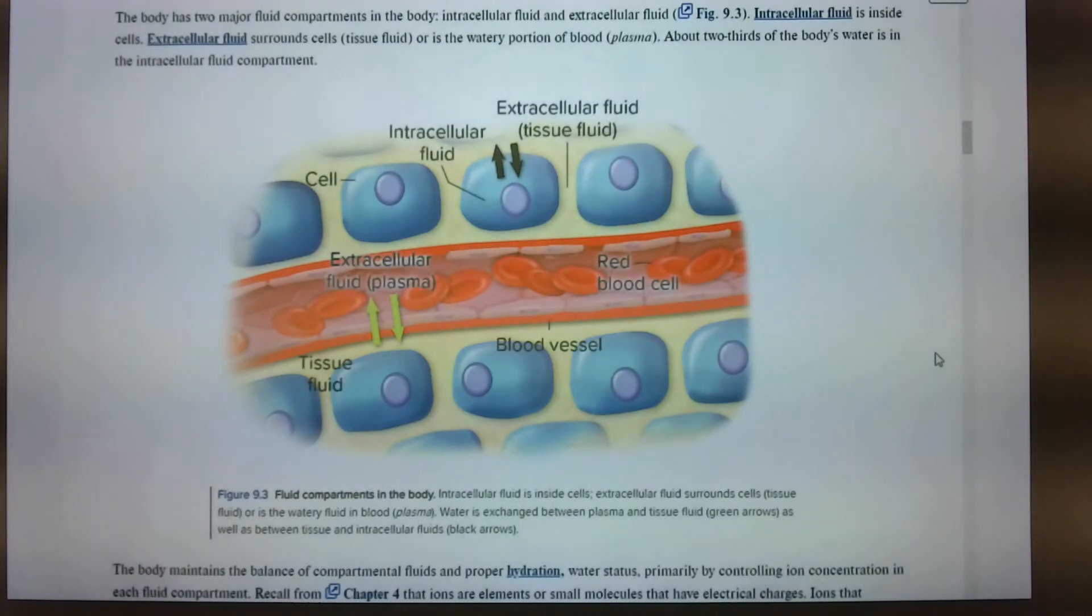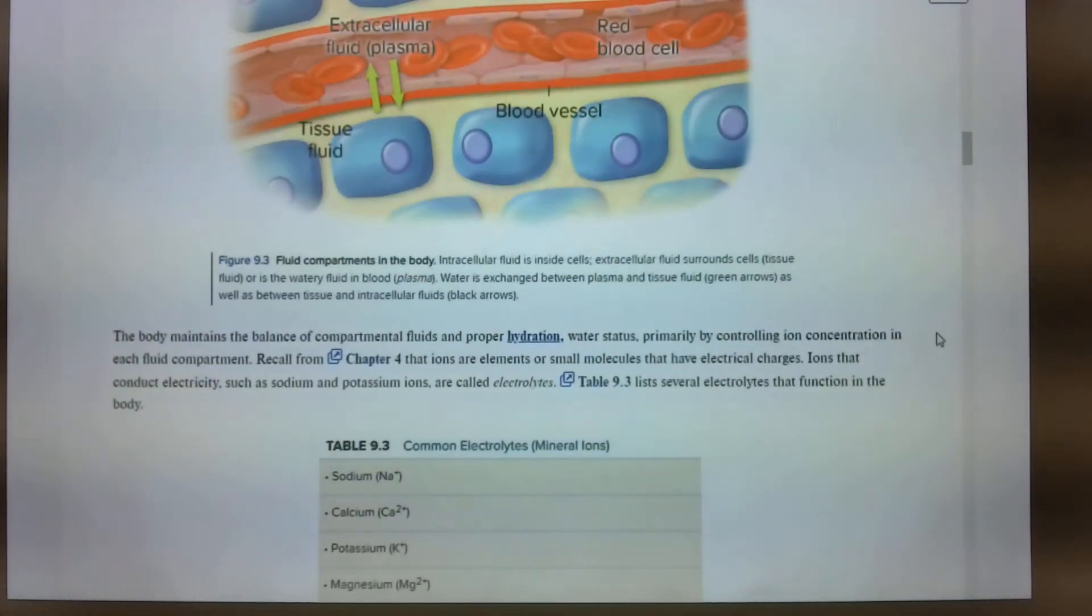About two thirds of the body's water is intracellular fluid compartment. That's a lot. The body maintains the balance of compartmental fluids at proper hydration. You're a soldier. You're out in the field this weekend. Do they provide you a lot of water when you're out there? Yes. They tell you to drink it. Do you have like a timer that every time it goes off you drink water? No. No? But they're pretty strict on that, right? About years there. Yep. Yep.